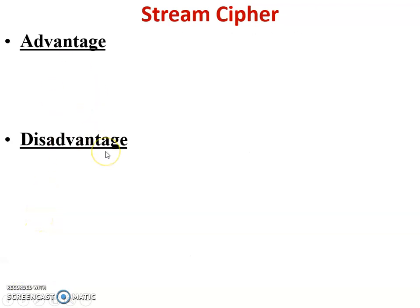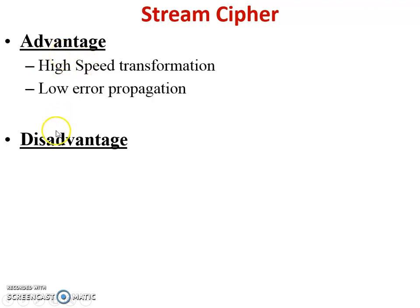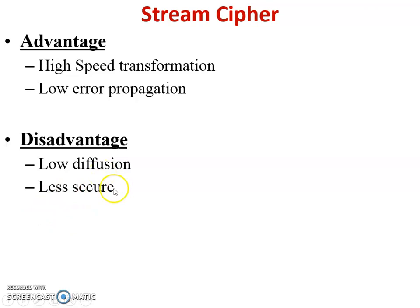Now let's look at the advantages and disadvantages of stream cipher. Advantages: high speed of transformation because at a time only one bit is encrypted and one bit is decrypted. Low error propagation because only one bit is converted at a time, so there is little chance of error. Disadvantages: low diffusion — there is no chance to change the location of bits, so diffusion is very low. Also, it is less secure because bit by bit encryption means someone can more easily decrypt a particular bit.